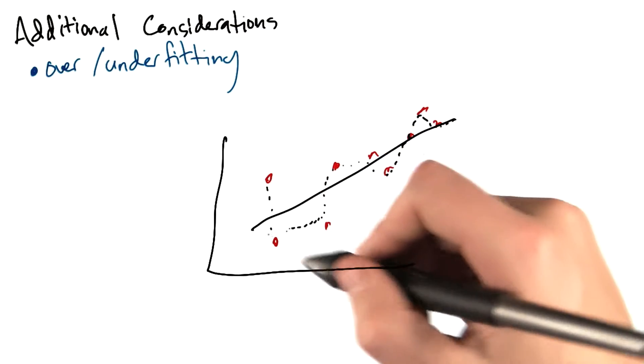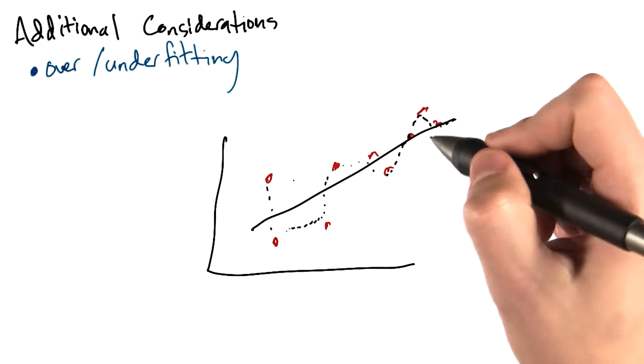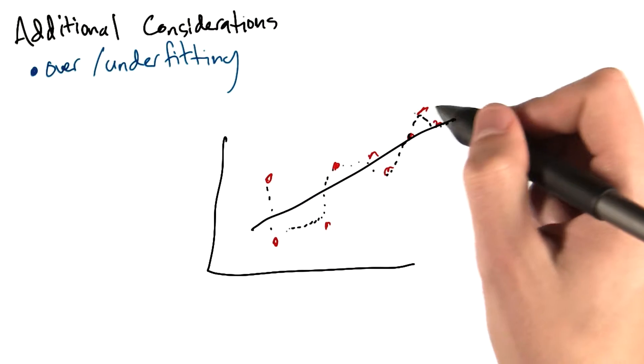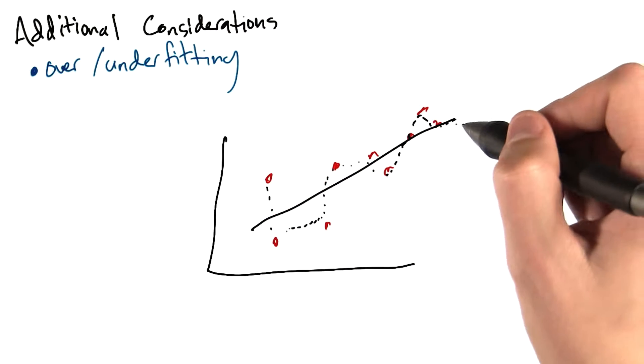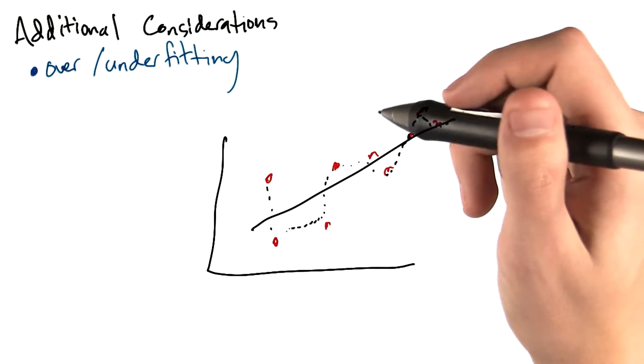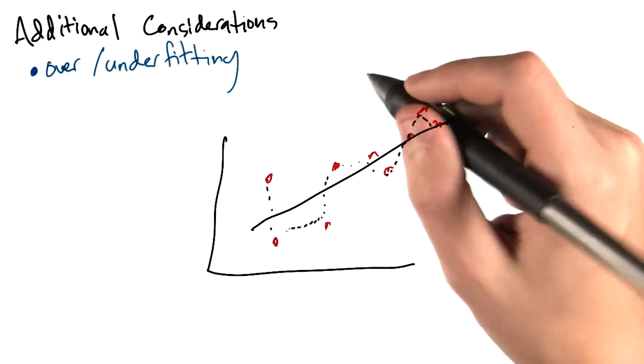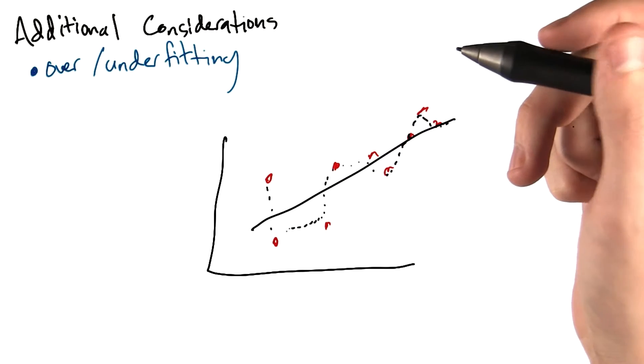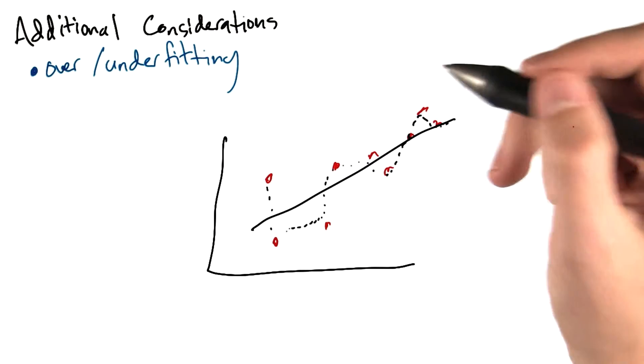Say we had some data like these red points that was approximately linear. If we had a model with many different parameters, we might be able to fit the data points exactly, whereas the actual underlying model is this black line. One way to deal with this is usually to split our data into a training set and a test set. Then we can train a model on the training data, and then test it on the test data, just as the name would imply. This is called cross-validation.